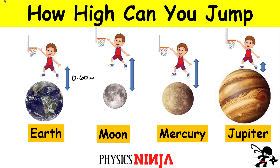That's 0.6 meters — my maximum height on the Earth. That is a result of my initial speed when I'm launching off the surface, and also a property of the acceleration due to gravity on the surface of the Earth, which is approximately 9.8 meters per second squared. We're going to have a different value on the Moon, Mercury, and Jupiter. The acceleration due to gravity on the surface of Jupiter is much bigger than on Earth, so we're going to get a different value.